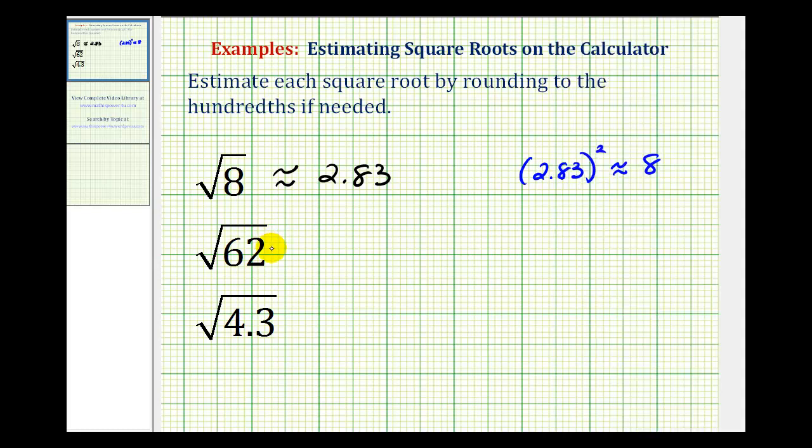The next example, we have the square root of 62. So we're looking for the decimal approximation of a number squared that's going to equal approximately 62. And since 62 is close to 64, and the square root of 64 is equal to eight, we should expect this value to be a little bit less than eight.